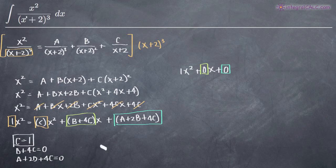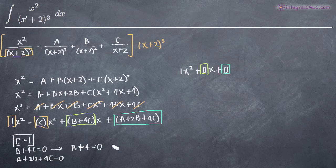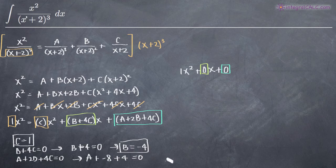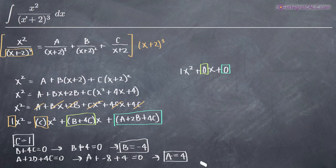We already know c equals 1. Plugging that into b plus 4c equals 0 gives us b plus 4 equals 0, so b equals negative 4. Then plugging b and c into A plus 2b plus 4c equals 0: 2 times negative 4 is negative 8, plus 4 times 1 is 4, so A minus 4 equals 0, giving us A equals positive 4. Now we've solved for all three variables and can plug them back into our partial fractions decomposition.